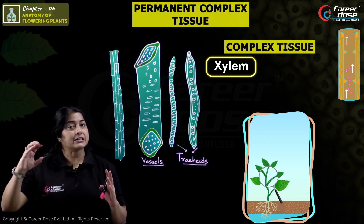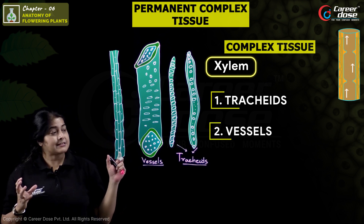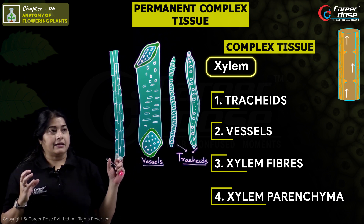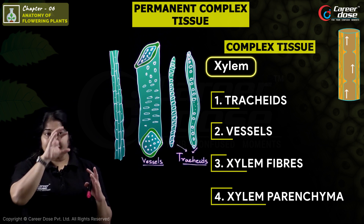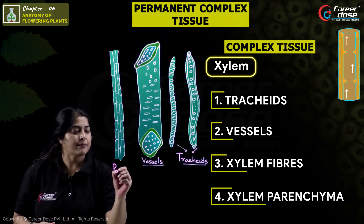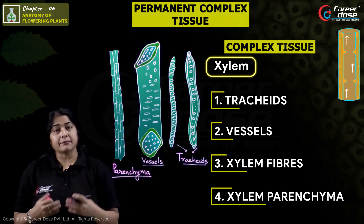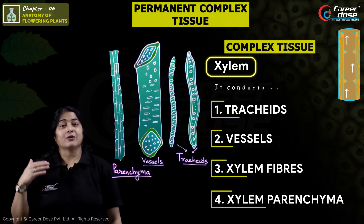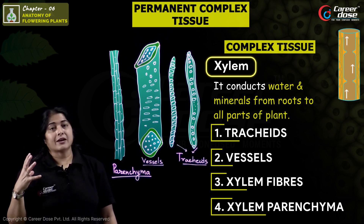Xylem is a complex tissue made of different components. There are four components: Tracheids, Vessels, Xylem Fibers, and Xylem Parenchyma. Unlike simple tissues where all cells are of one type, Xylem is formed by more than one type of cell — that is why it is called a complex tissue. It conducts water and minerals from roots to all parts of the plant.